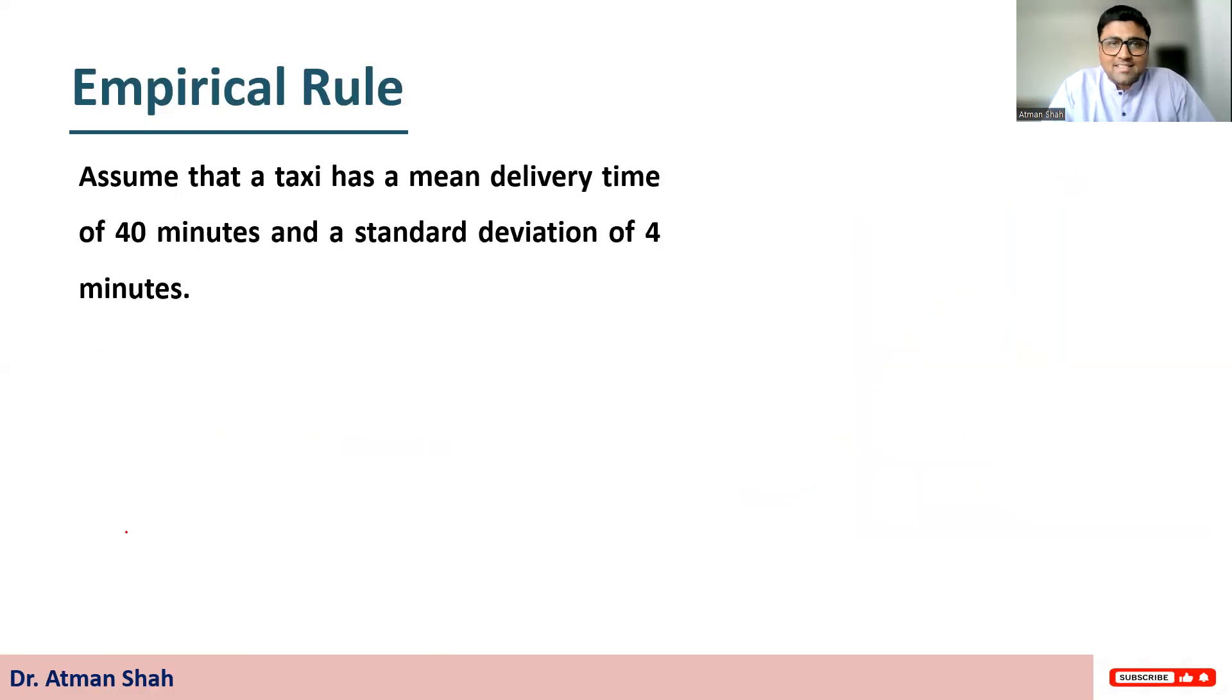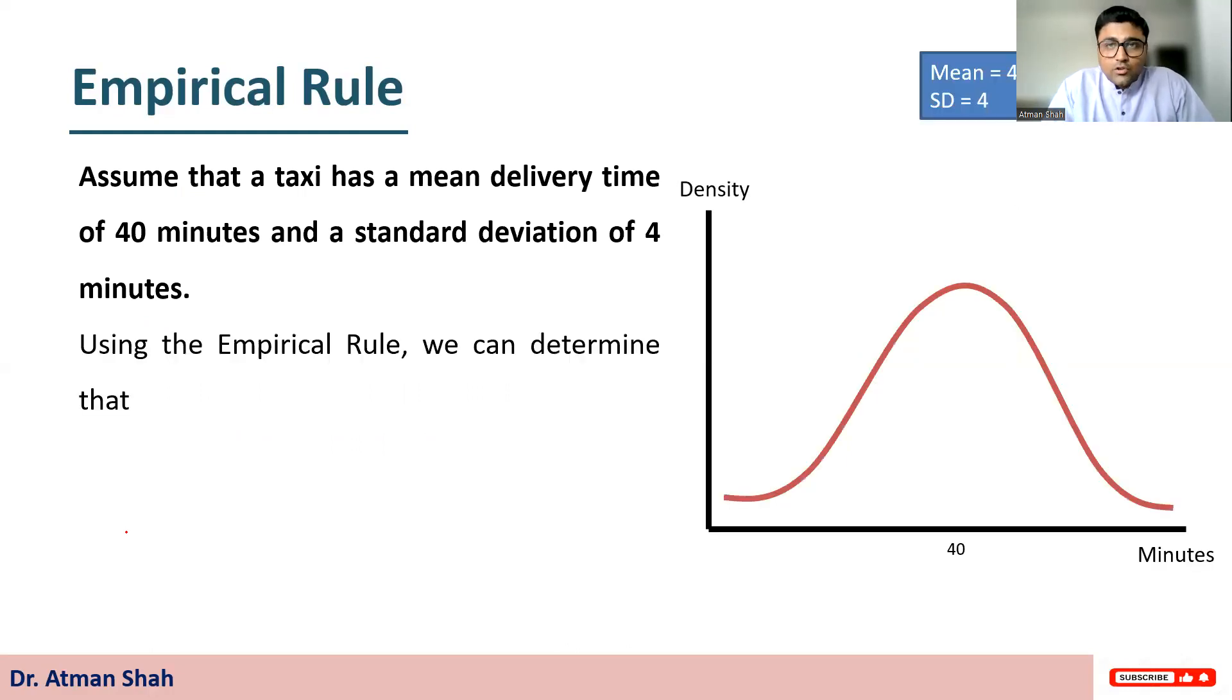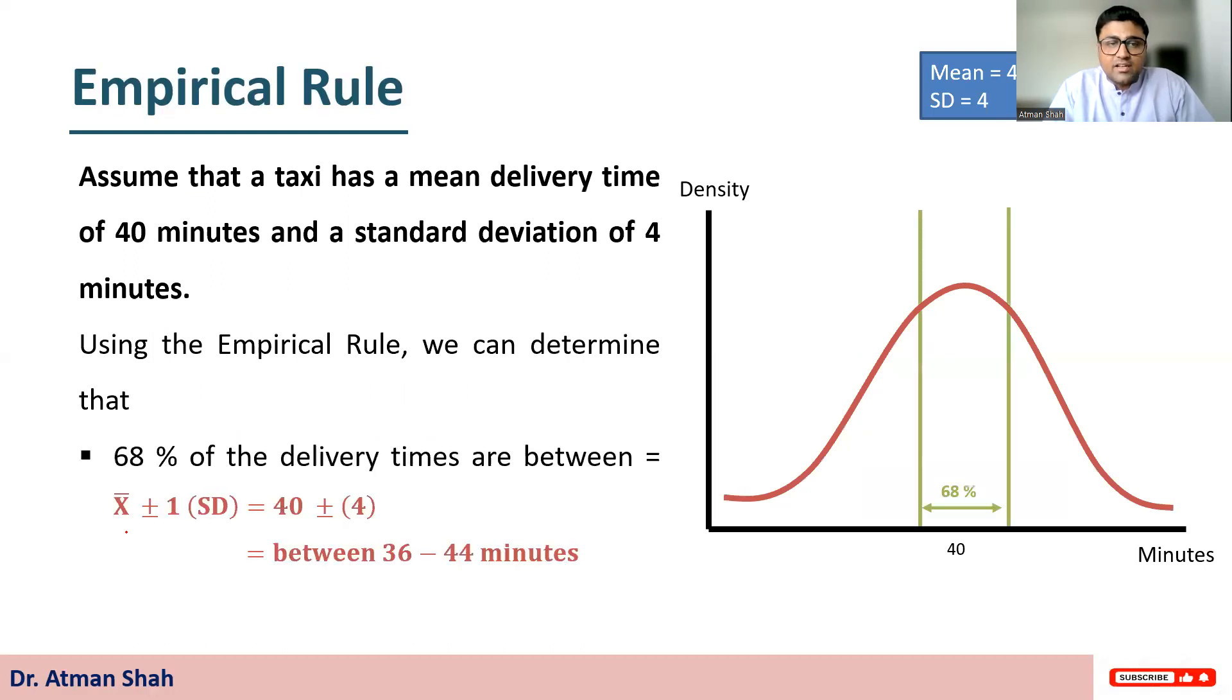Now let's understand this with the help of example. Let's assume that a taxi has a mean delivery time of 40 minutes and a standard deviation of 4 minutes. Using this empirical rule, we can determine that 68% of the delivery times are between 36 and 44 minutes.